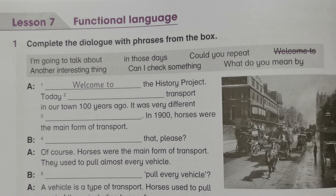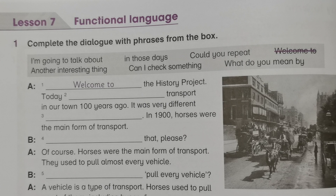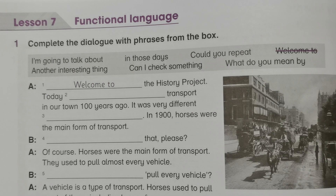Okay pupils, we are on the Year 6 Academy SAS book on page 26. We are still on Unit 2, Lesson 7 — functional language. Activity 1: complete the dialogue with phrases from the box.